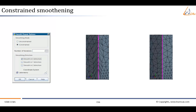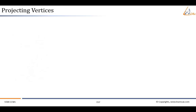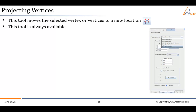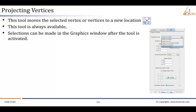The next tool is 'Project Vertices'. This tool moves the selected vertex or vertices to a new location using one of five modes. This tool is always available, as selections can be made in the graphics window after the tool is activated.